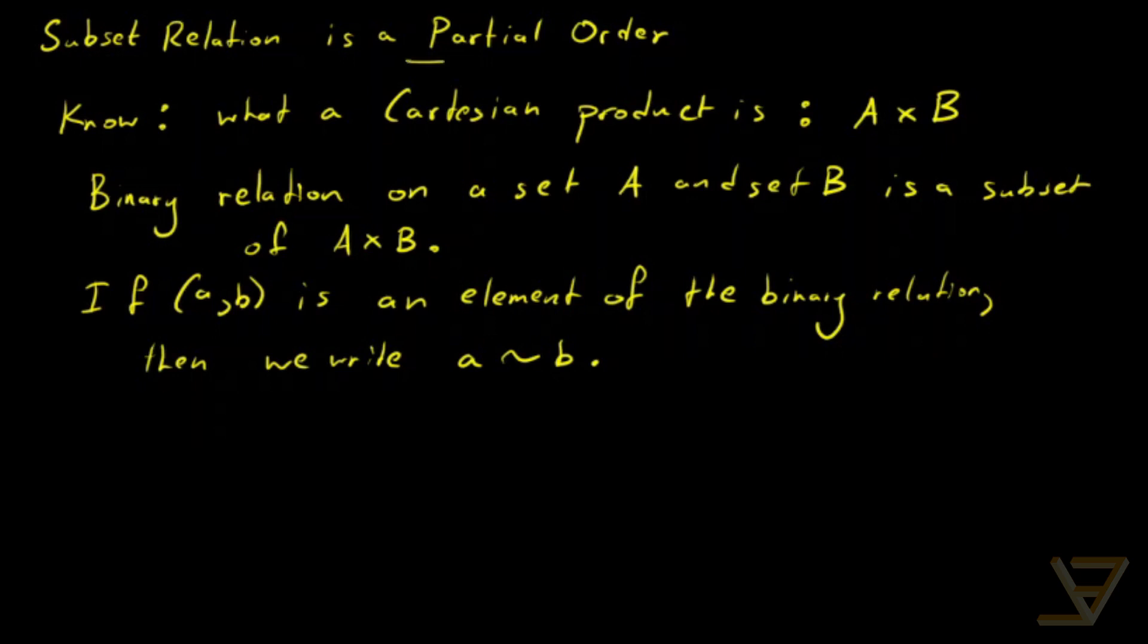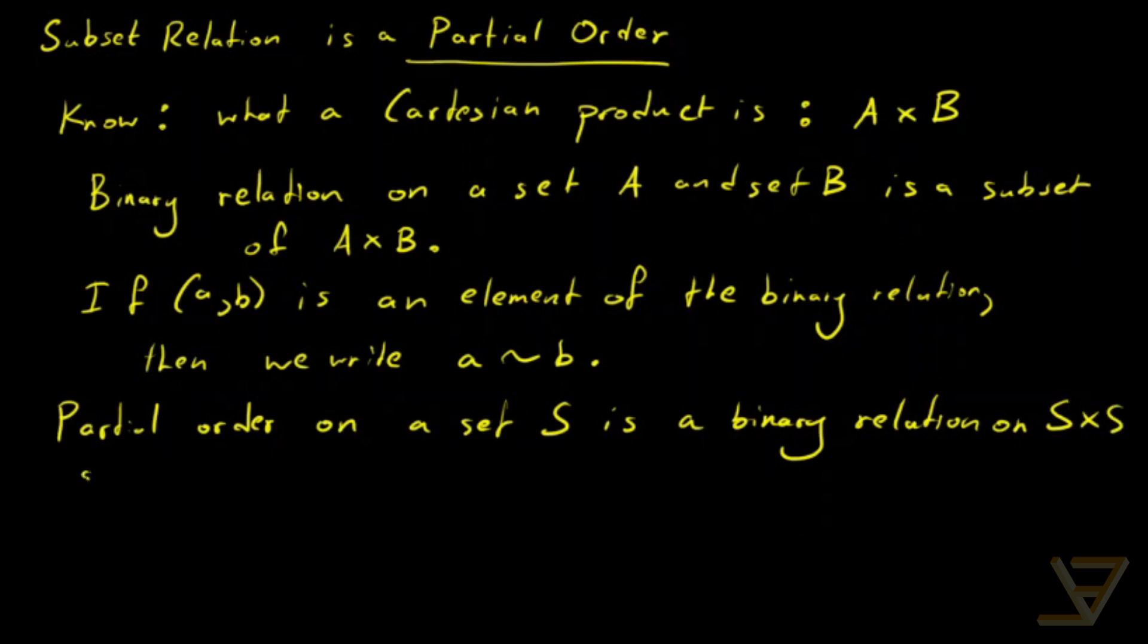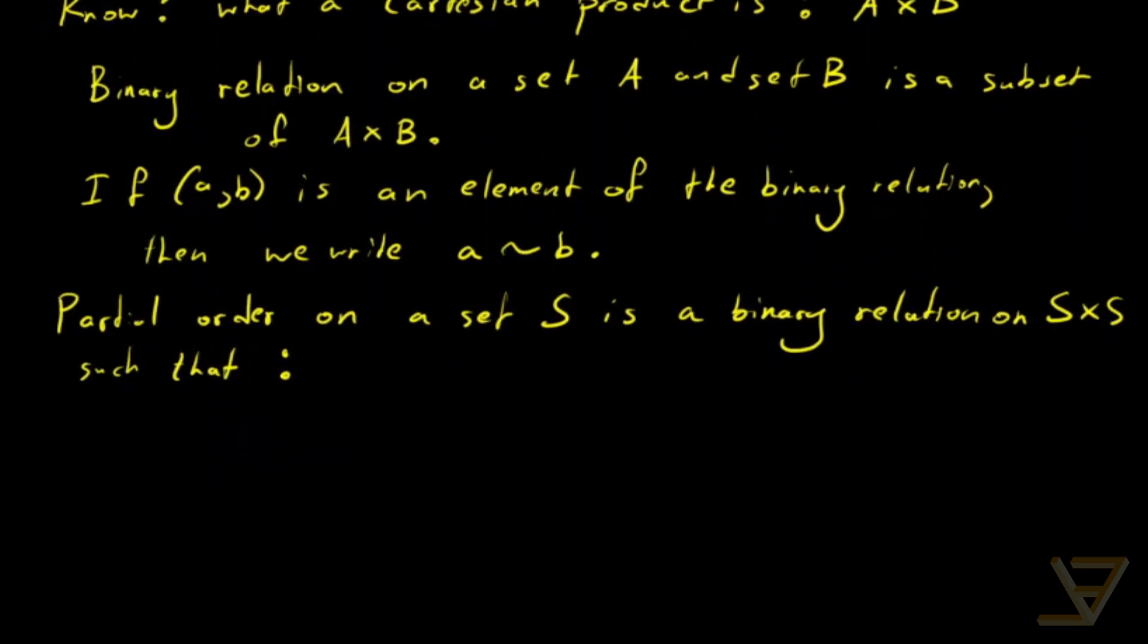Now we can finally get into what a partial order is. A partial order on a set S is a binary relation on S cross S such that there are three properties that have to hold and I'll list them for you now.